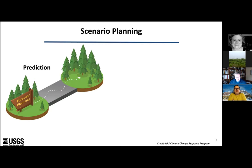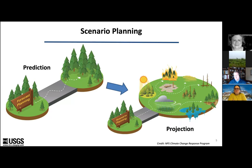A recommended way to use this is scenario planning — you prepare for a range of different futures and look at the resulting impacts to your community. What if it gets a little wetter? A lot wetter? A little drier? A lot drier? What if sea level rises a little, or a lot? That gives you a sense of where the risks are, what the vulnerabilities to your systems are, and therefore what might be robust ways to plan for the future that account for an uncertain future.